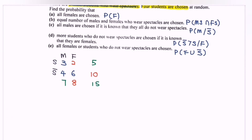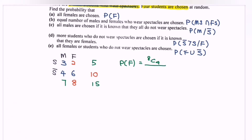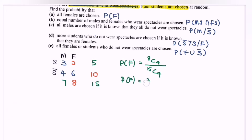For part A, all females are chosen. We are choosing 4 students, so we select 4 from the 8 females: 8C4. With no restriction on the total selection, the denominator is 15C4. So the probability that all females are chosen equals 8C4 over 15C4, which equals 2 over 39, or approximately 0.0513 in decimal.